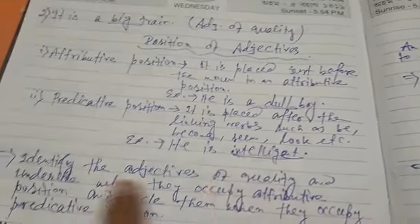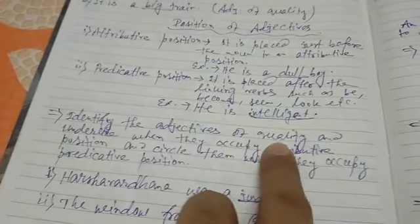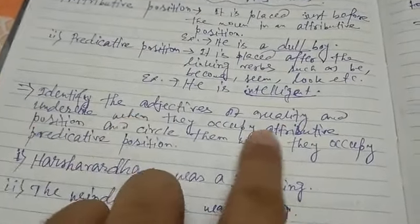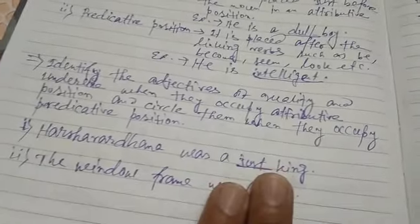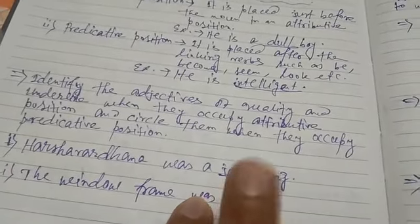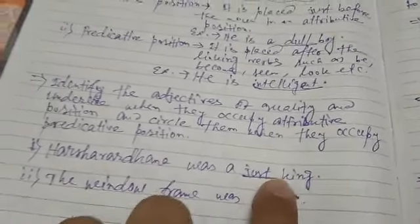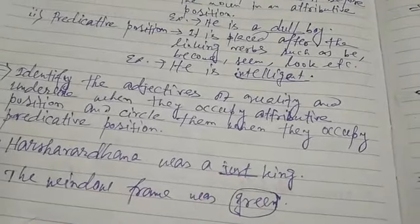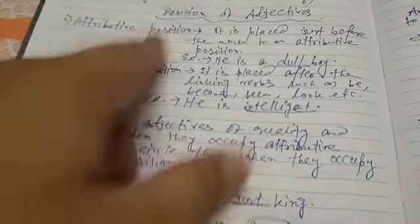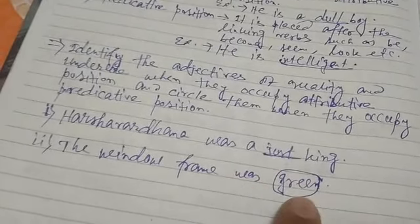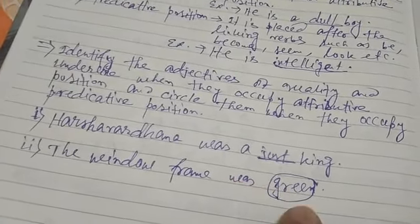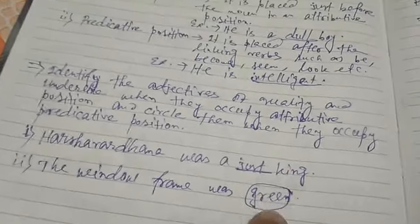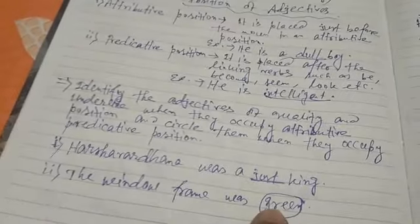So 'intelligent' is in predicate position. Now identify the adjectives of quality, underlining them when they are in attribute position and circling them when they are in predicate position. For example: 'the warden was just' — 'just' is in attribute position so we underline it. But 'the window frame was green' — 'was' is the linking verb and 'green' comes after it, so 'green' is in predicate position and we circle it.